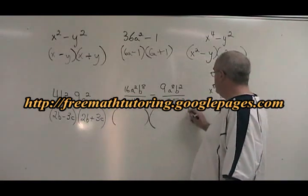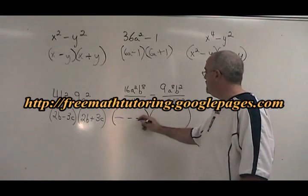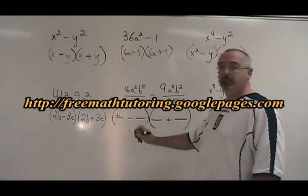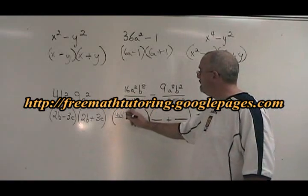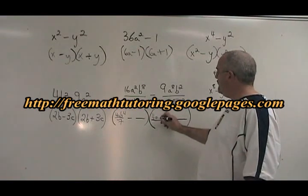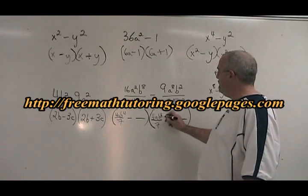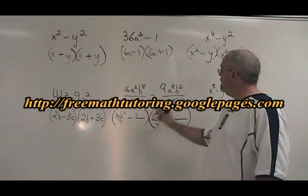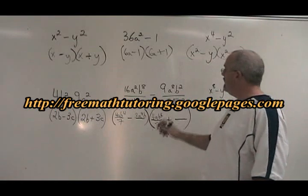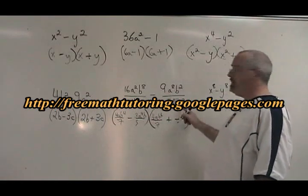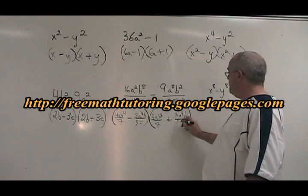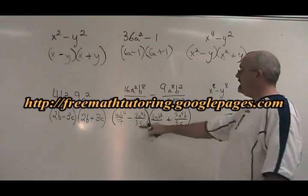You write your brackets. Square root of 16 is 4. Square root of a squared is a. The square root of b to the 8 is b to the 4. And the square root of 49 is 7. So the first term's square root is 4ab to the 4 over 7. The square root of 9 is 3. The square root of a to the 8 is a to the 4. The square root of b squared is b. And the square root of 25 is 5. The square root of c squared is c. So you have 3a to the 4b over 5c in both second positions in the binomials.